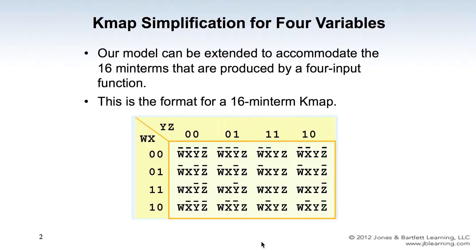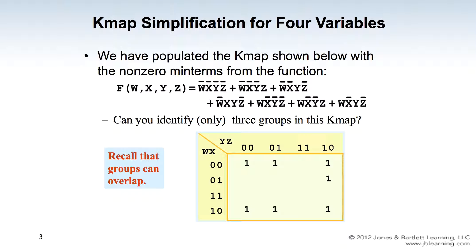Now let's consider a specific boolean function with four input variables W, X, Y, Z equal to the summation of seven minterms. The first step is to set up the KMAP for four input variables and fill in the value of 1 for each of the minterms in the boolean function. For example, the first minterm is W-not, X-not, Y-not, Z-not.